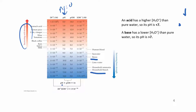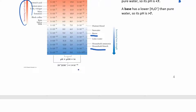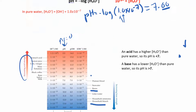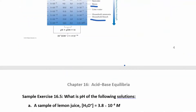pH plus pOH gives you 14. So if you know what the pH is, you can figure out the pOH. Hydronium times hydroxide equals 1 × 10⁻¹⁴, and we're going to use that equation over and over again. So if you know hydronium, you can get to hydroxide. If you know hydronium, you can get to pH. We have a couple of different relationships here.